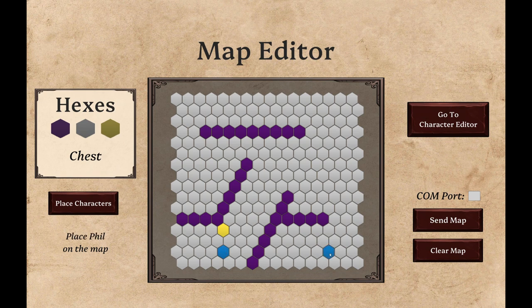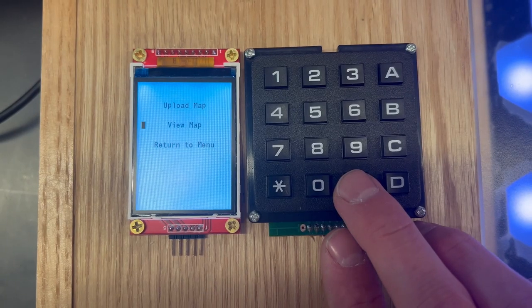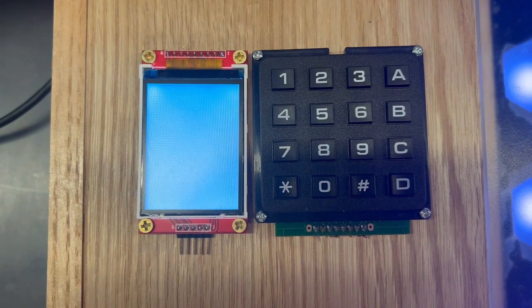We created a map, so now we place the characters. Once all characters are placed, we can enter the comp port for the USB device and then send the map. After uploading, you can now view the map.